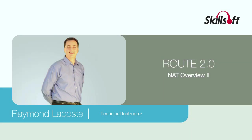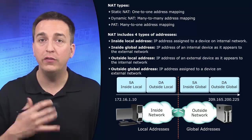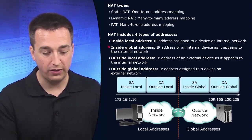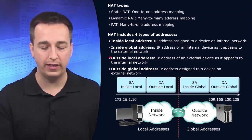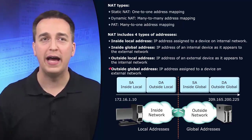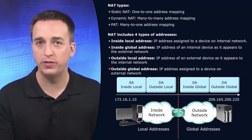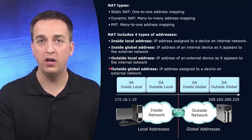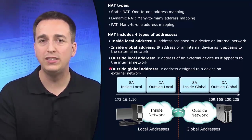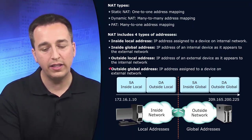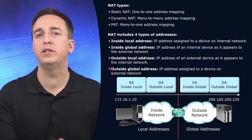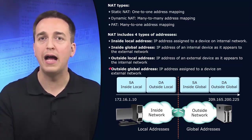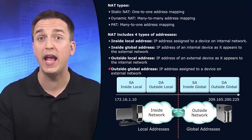NAT refers to IPv4 addresses in four different ways: the inside local address, the inside global address, the outside local address, and the outside global address. These four terms are a great cause of confusion amongst learners. It's difficult to understand these, but hopefully by the time you've finished here you will understand them better and have a visualization of what they represent.